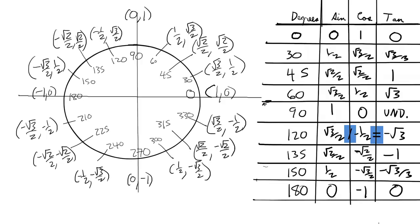Tangent of 120 degrees is negative √3. Tangent of 135 degrees is negative 1. Tangent of 150 degrees is negative √3 over 3. And tangent of 180 degrees is 0. Please keep in mind if you continue throughout the unit circle, the signs of certain trig functions will be negative.